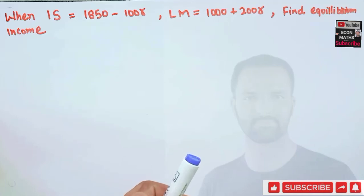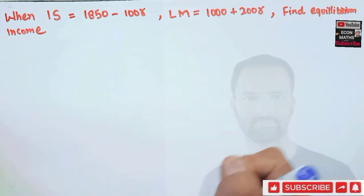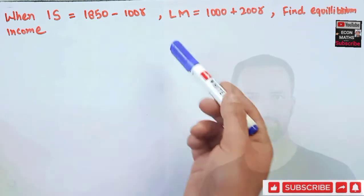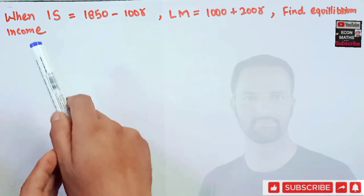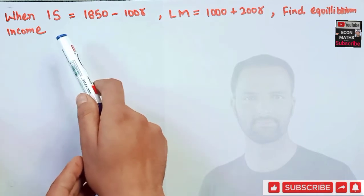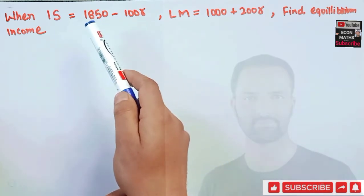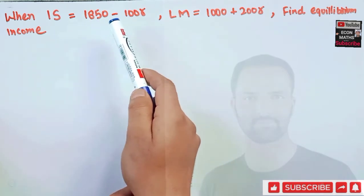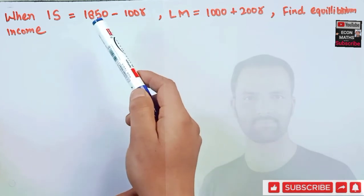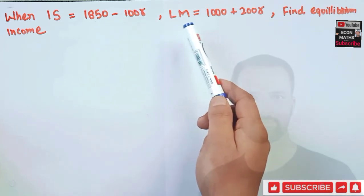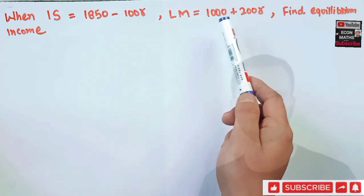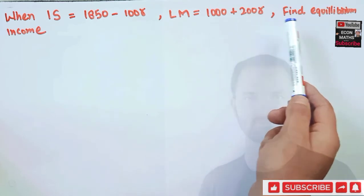In this video on mathematical economics series, we will try to solve a problem on finding the equilibrium income from the given IS and LM functions. The question is: when the IS function is given by 1850 minus 100R, where R represents the rate of interest, and LM is given as 1000 plus 200R, we have to find the equilibrium level of income.